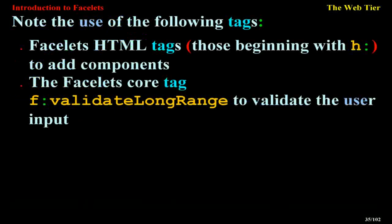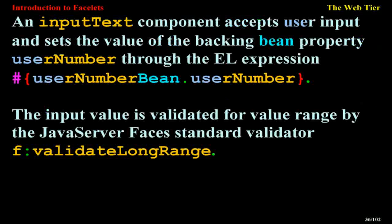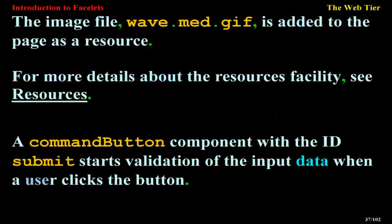Note the use of the following tags: Facelets HTML tags (those beginning with h:) to add components, and the Facelets core tag f:validateLongRange to validate user input. An h:inputText component accepts user input and sets the value of the backing bean property userNumber through the EL expression #{userNumberBean.userNumber}. The input value is validated for value range by the JSF standard validator f:validateLongRange. The image file wave.med.gif is added to the page as a resource.